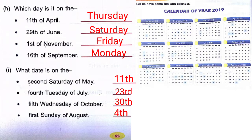The first Saturday of May is the 11th. The 4th Tuesday of July is the 23rd. The 5th Wednesday of October is the 30th. The 1st Sunday of August is the 4th.